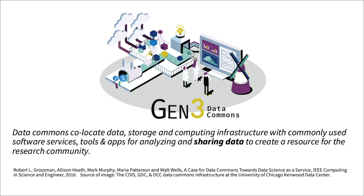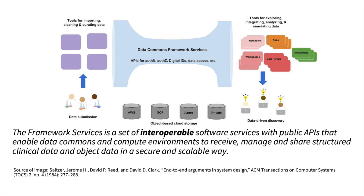Interoperating data commons in this way is a critical step towards creating a data ecosystem, wherein individual data commons don't operate as isolated data silos, but rather become nodes in an interconnected network of resources. The framework services demonstrate the core set of software services required to enable a data commons to store data and provide users a way to discover and access that data. Through conformance to technical guidelines and operating principles, the framework services enable a data commons to interoperate with other resources that make up the data ecosystem.